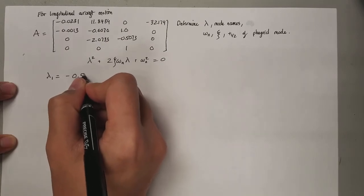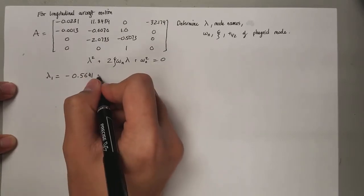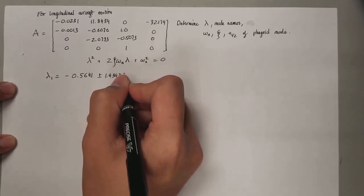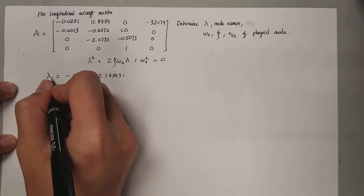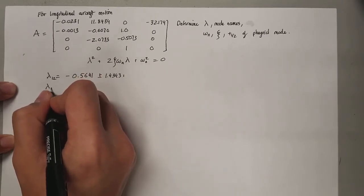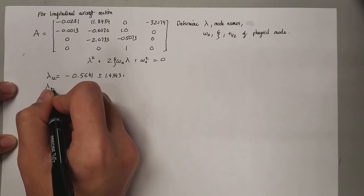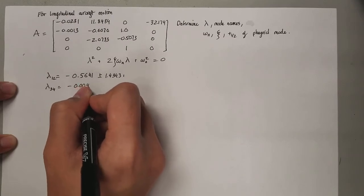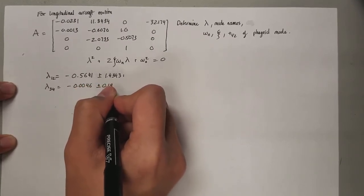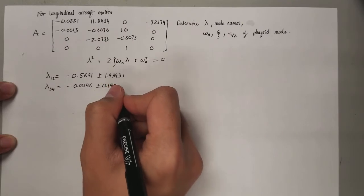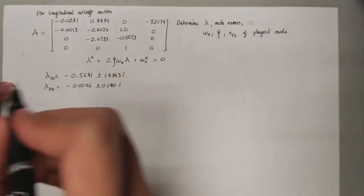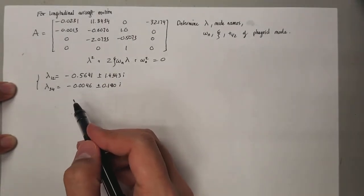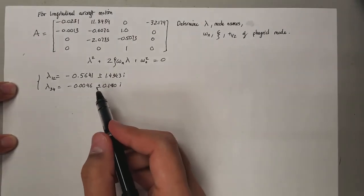The eigenvalues are: negative 0.0046 plus or minus 0.1943i, and negative 0.0046 plus or minus 0.1910i. These are the two pairs of complex eigenvalues that we obtain from the matrix.